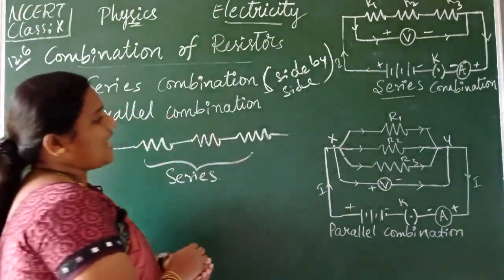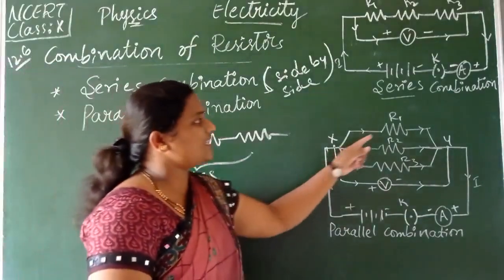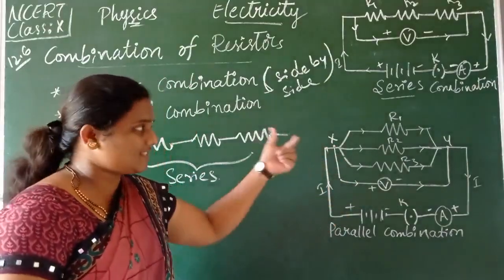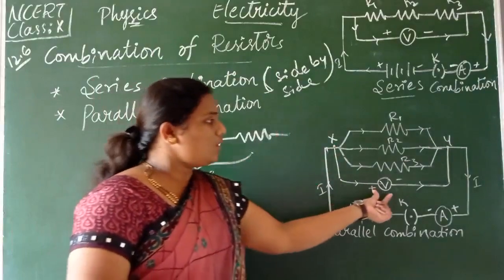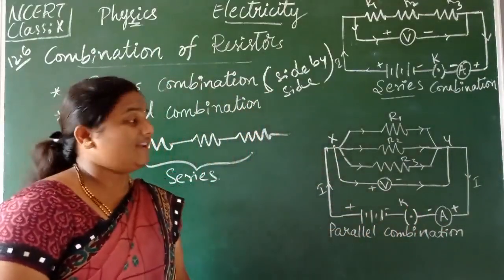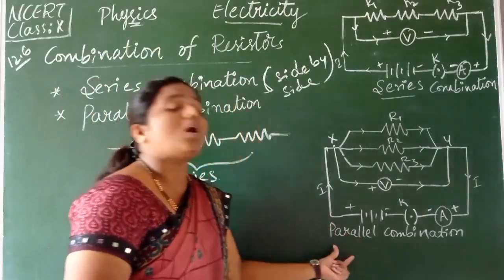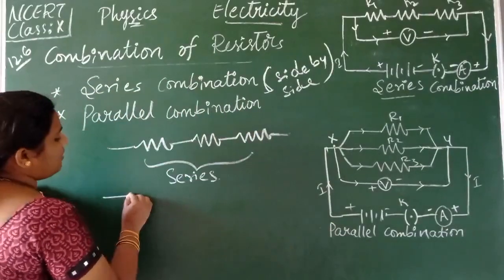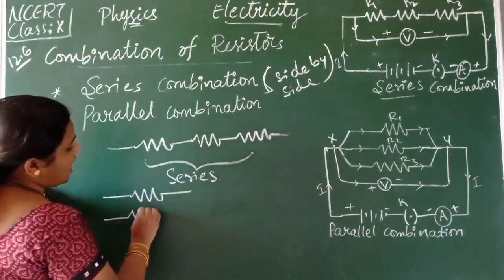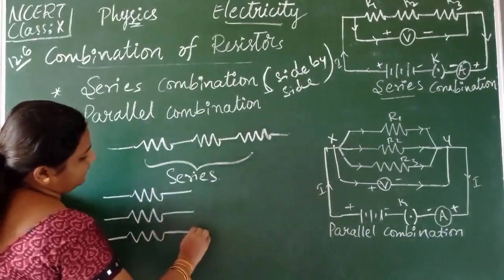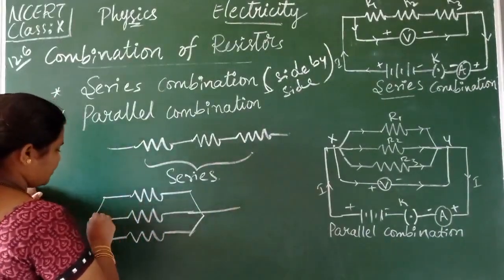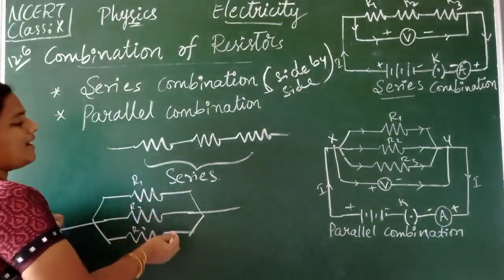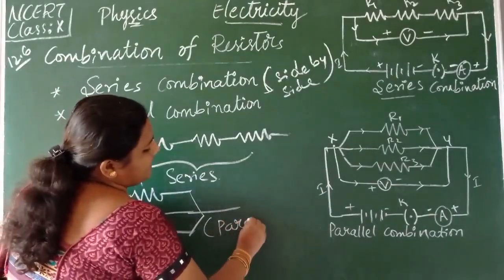Let us look at a parallel combination. If R1, R2, R3 — three resistors — are connected in parallel using an ammeter, plug key, and a battery, such a combination is called parallel combination. In parallel combination, the resistors should be down by down. Say R1, R2, and R3 are arranged down by down — this is called parallel combination.